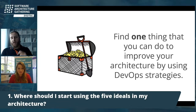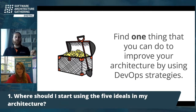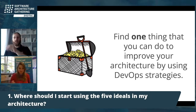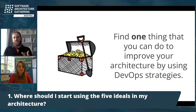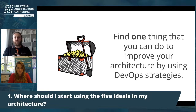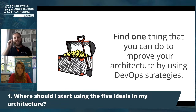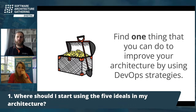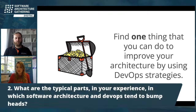Where should I start using the five ideals in my architecture? This is a very difficult question because there is not one place to start. It's just like the Three Ways — it's not like you start with the first way then move to the second and third. With the five ideals it's more hypothesis-driven: think about where the biggest pain is currently. Is it with simplicity? Is it with flow and joy? Is it with customer focus? Then try to improve one small thing there and see how the overall system reacts.